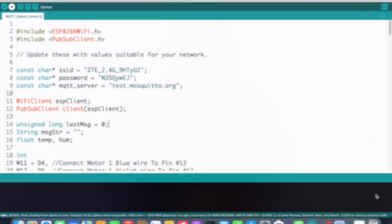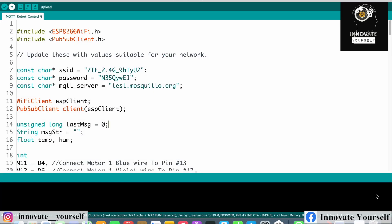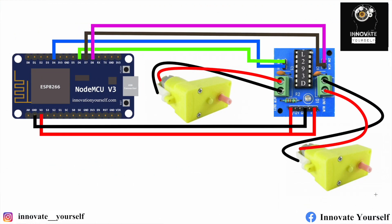Let's get started. Before starting with the coding and application part, let's first make the connections of the NodeMCU and the robot so we can do the communication between them and control the movement of the robot. Let me show you the circuit diagram. We have a NodeMCU for coding, and we're connecting motors through an L293D motor driver module in between to get full forward, backward, left, and right movement control.